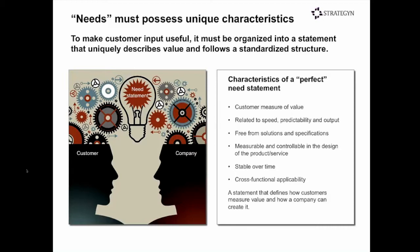When thinking about what makes the perfect need statement, it would have to have very unique characteristics. First, it must be the way the customer measures value — a customer measure of value, reflecting how the customer thinks about success as they get the job done. It also has to relate to getting the job done better. In order to get a job done better, you can get it done faster, more predictably, or with higher output and throughput.